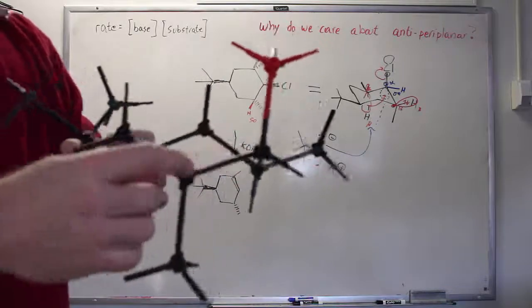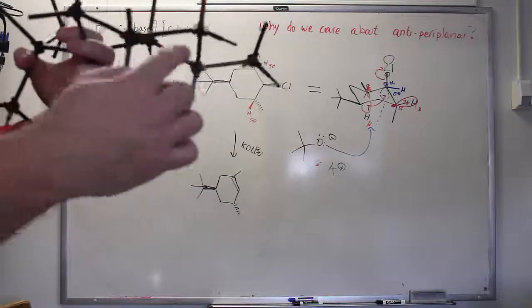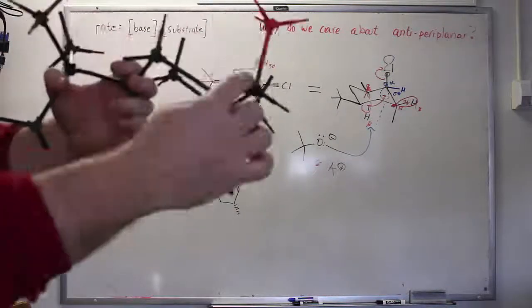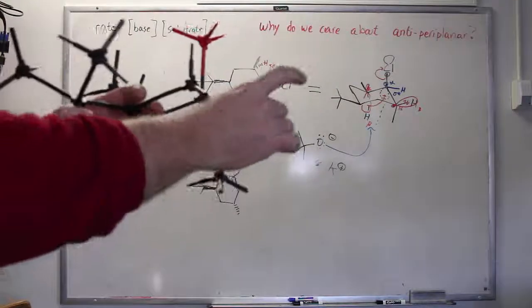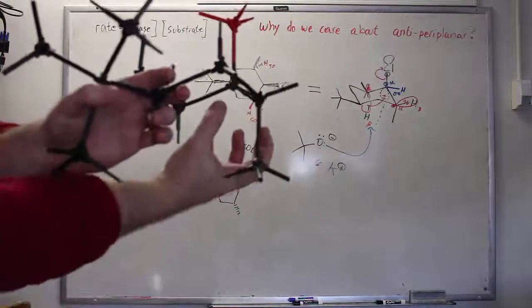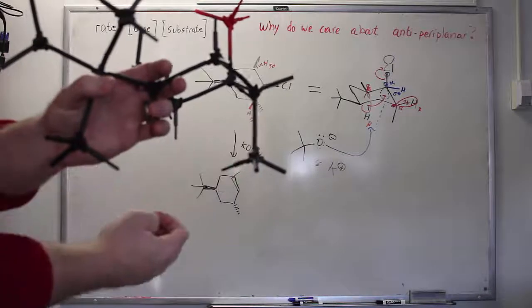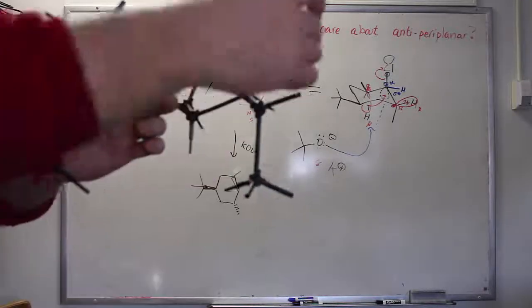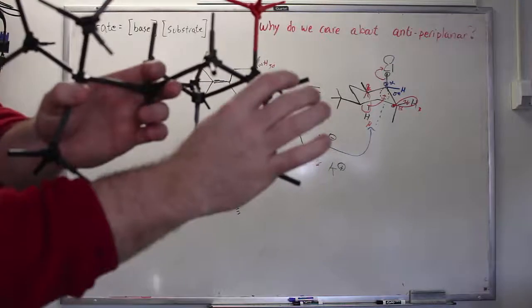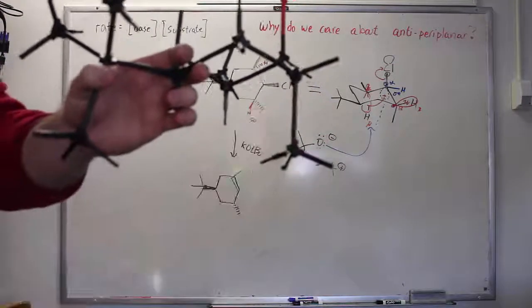Meanwhile this hydrogen, this equatorial hydrogen, is poorly aligned. The orbital's down here. This hydrogen is sticking up and away. In other words that hydrogen cannot access this orbital. The electrons from that hydrogen cannot access that orbital when abstracted. So the base comes in, tries to remove that proton. It can't because there's nowhere for these electrons to go.